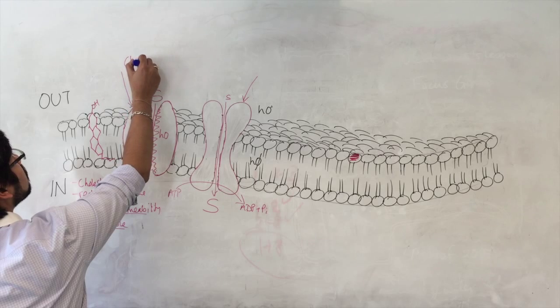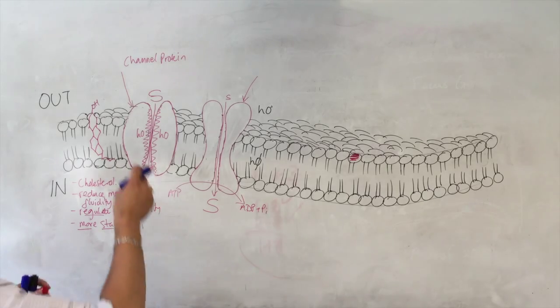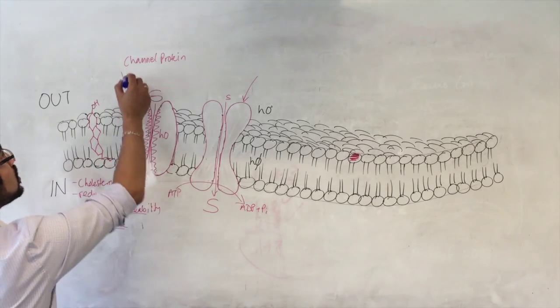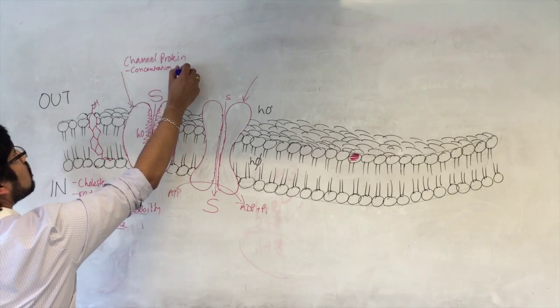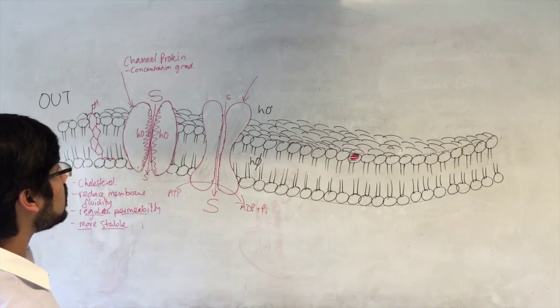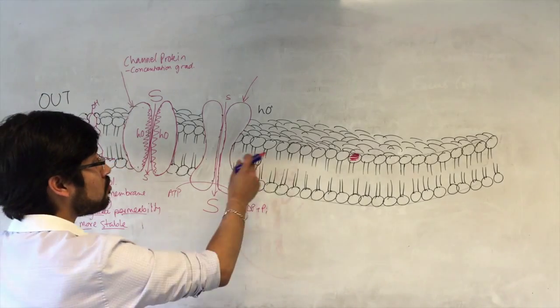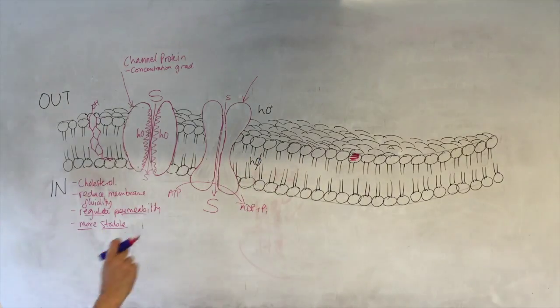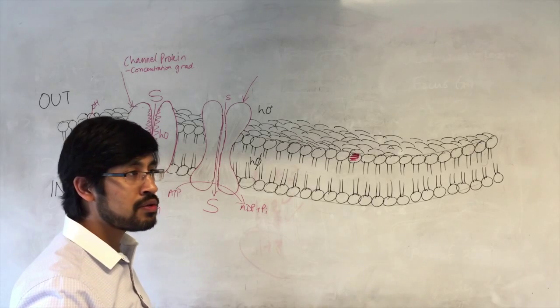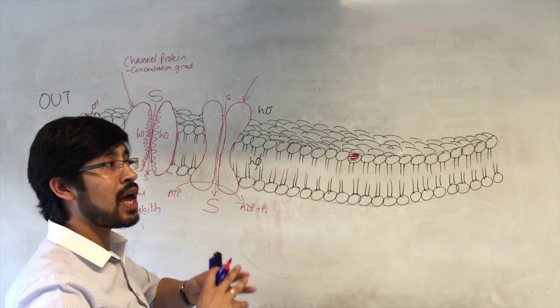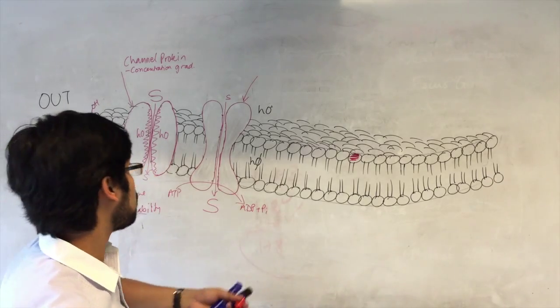The first is called the channel protein, and essentially what that does is allows things to move down their concentration gradient, things that otherwise might not be able to move through the hydrophobic part of the membrane. Here we're talking about things like ions, mineral ions, bigger ions such as nitrates, and slightly bigger and more polar and hydrophilic molecules such as glucose and other sugars.